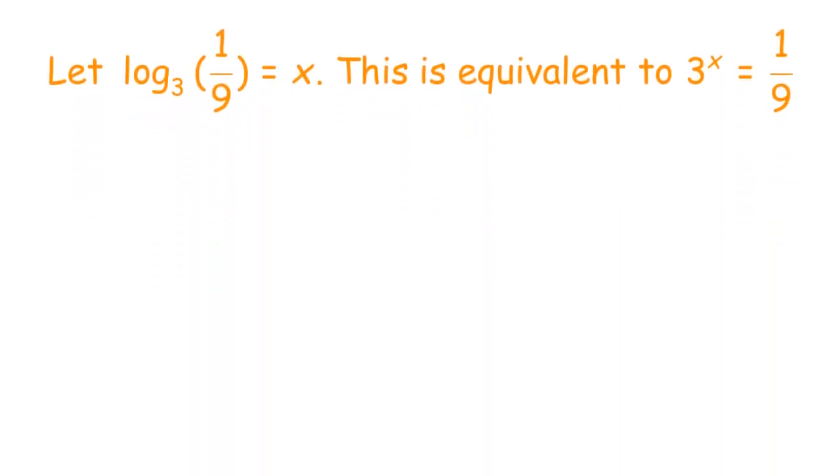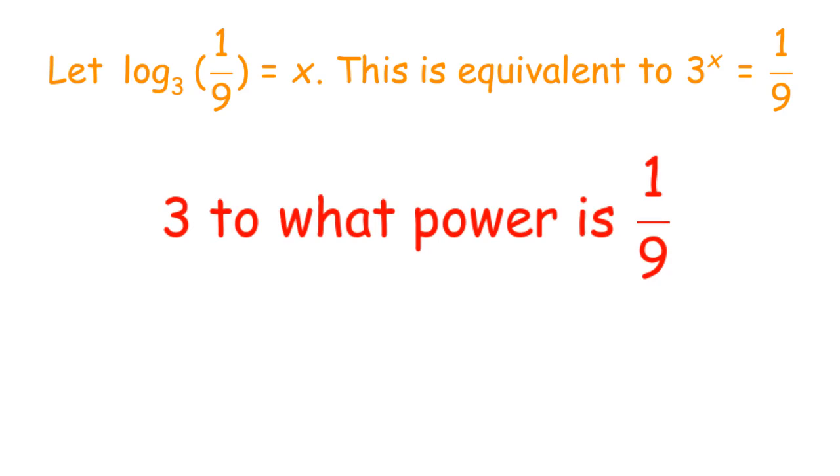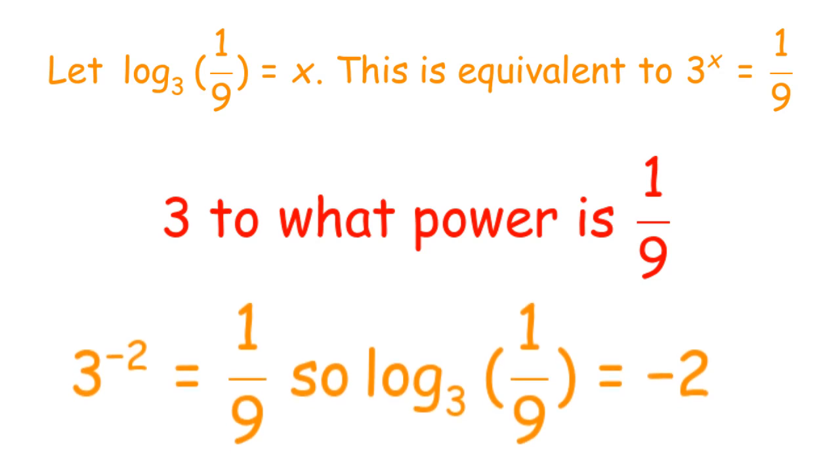Let log base 3 of 1 ninth equal x. We're trying to find x. This is equivalent to the equation 3 to the power of x is equal to 1 ninth. Now we ask ourselves the question, 3 to what power is equal to 1 ninth? And finally, we come up with the answer. 3 to the power of negative 2 is equal to 1 ninth. So, log base 3 of 1 ninth is equal to negative 2.